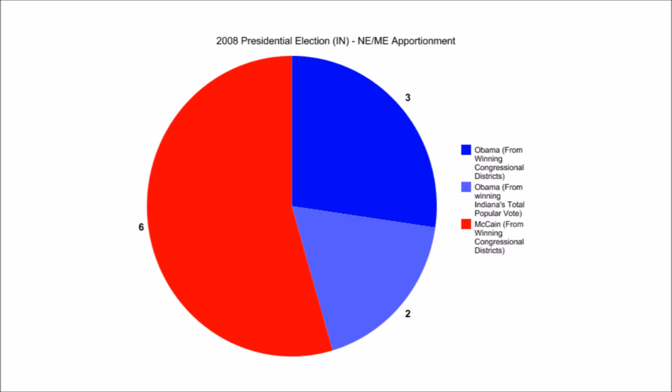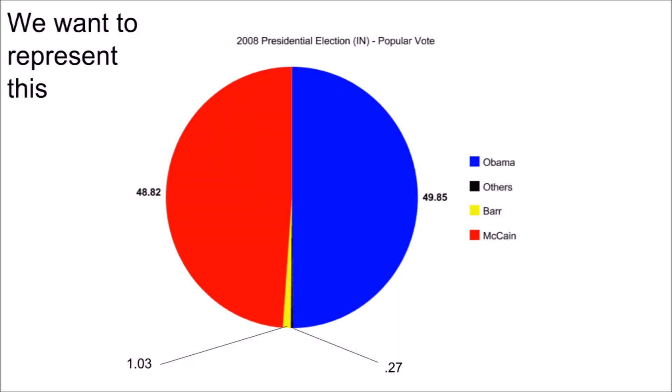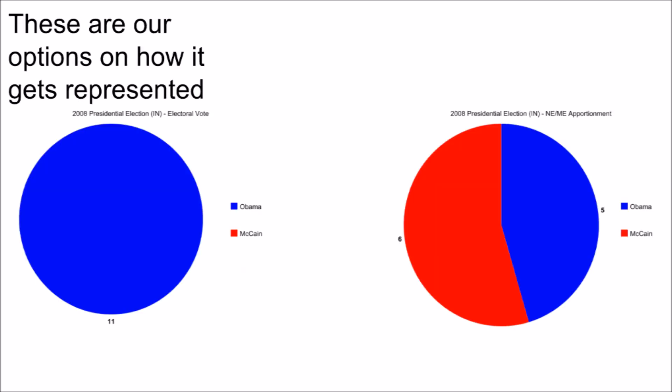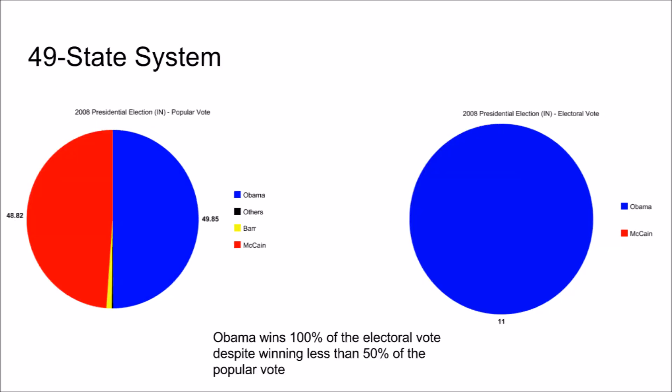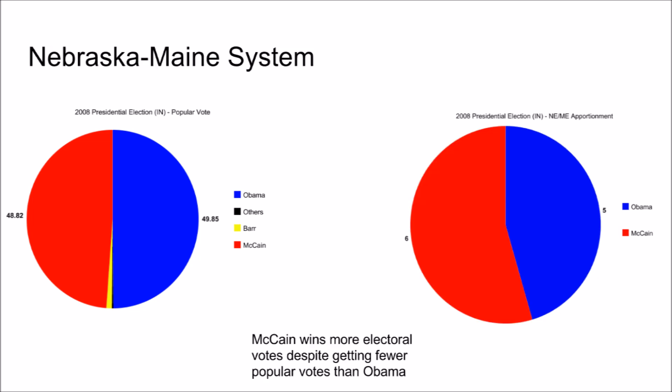Because Obama won Indiana's popular vote overall, he would have gotten 2 electoral votes. Neither the system used by the 49 contests nor the Nebraska-Maine system represents the will of the people. In the statewide system used by every state except Nebraska and Maine, Obama would take 100% of the electoral vote despite getting less than 50% of the popular vote. And in the Nebraska-Maine system, McCain would win more electoral votes than Obama despite winning fewer popular votes than him.